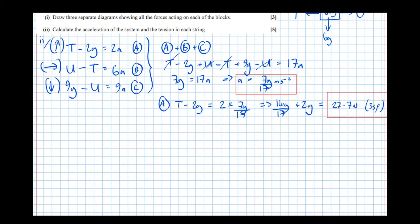Finally, to get the final tension, let's use equation C to get the value of u. So equation C, we have 9g take u is 9a, where a we worked out previously as 7g over 17. So simplifying that, 9g minus u equals 63g over 17.